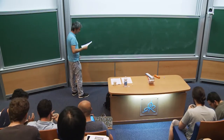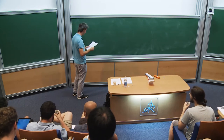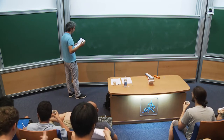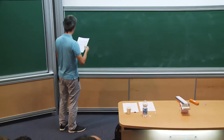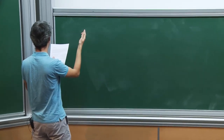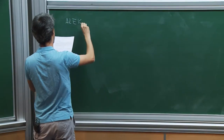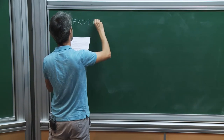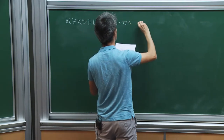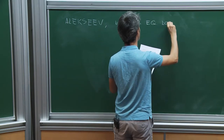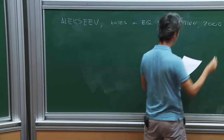Before starting lecture two, I'd like to add a few clarifications on yesterday's lecture. There are plenty of reviews on equivariant cohomology, equivariant localization, and so on. Let me point out one that I found which is relatively short and concise. This is by Alex Siv, and it's called 'Notes on Equivariant Localization,' from 2000 if I remember correctly.